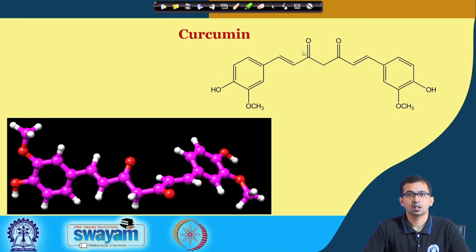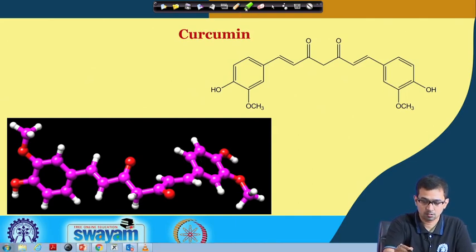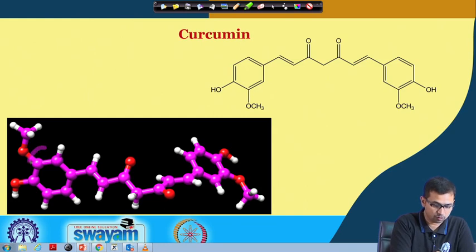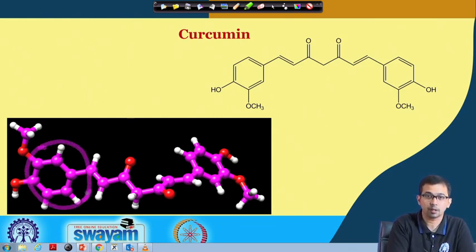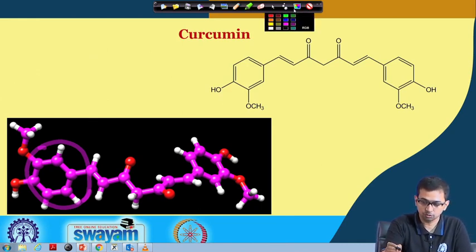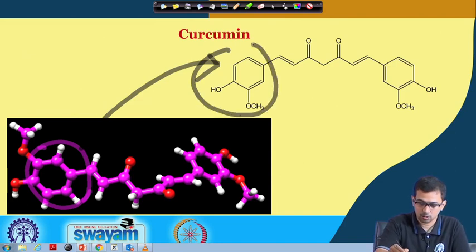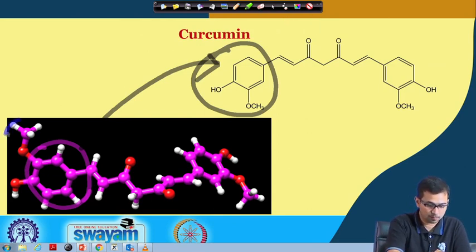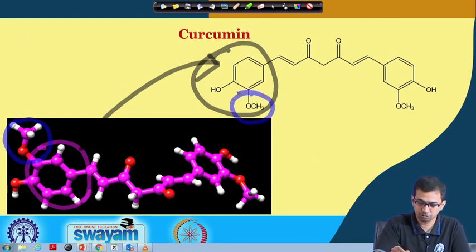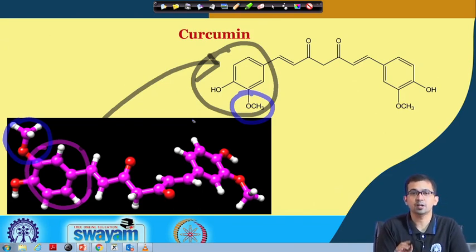First we can look at curcumin. This is the structure of curcumin — when we analyze it in any software such as Gaussian, this is the ball-and-stick model. This ring, marked in purple, is one of the aromatic rings of curcumin, and it corresponds to this structural moiety. We can correlate it because of the OCH3 part here and the OCH3 part on the other side.